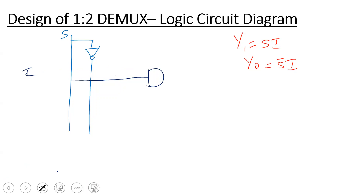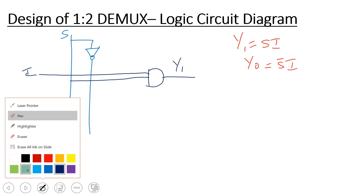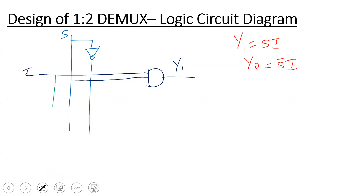So Y1 equals S into I, and Y0 equals S-bar into I. This gives us the circuit diagram for the 1-to-2 DEMUX. For higher-order DEMUX: 1-to-4 has 2 select lines, 1-to-8 has 3 select lines and 8 output lines, and so on up to 1-to-16, 1-to-32, 1-to-64. In the next video, we will cover the 1-to-4 DEMUX.